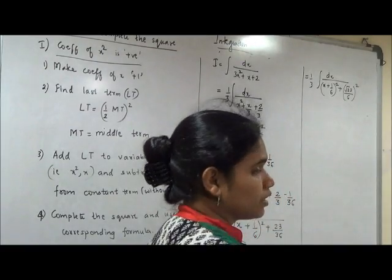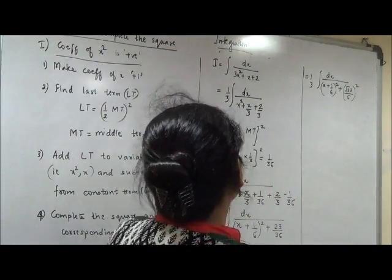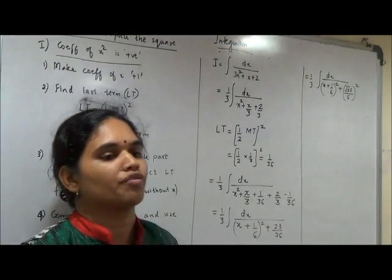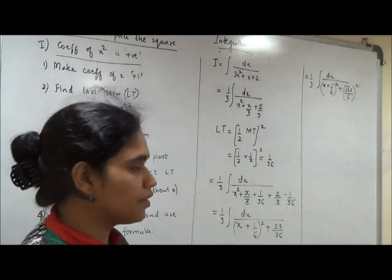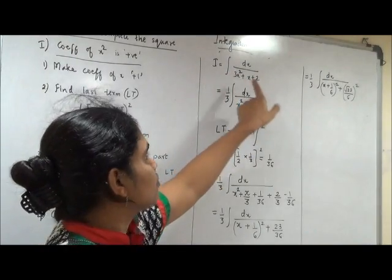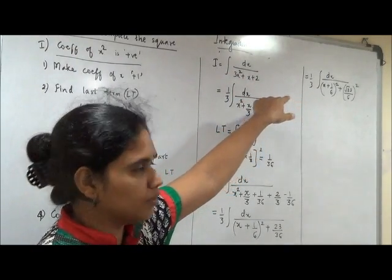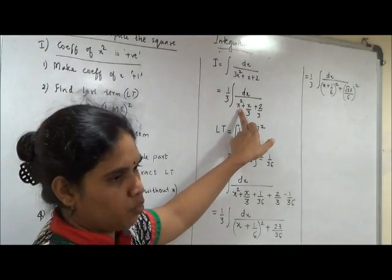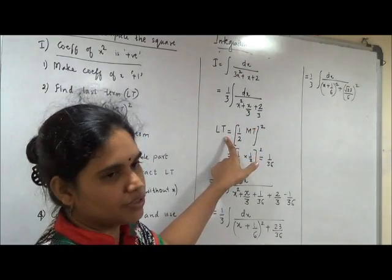So once again I just revise what is important over here. First rule we are following when coefficient of x square is a positive number. So that number is taken common outside. In that process you have to divide each term by that particular number. Once the coefficient of x square is made 1, positive 1, you find the last term.